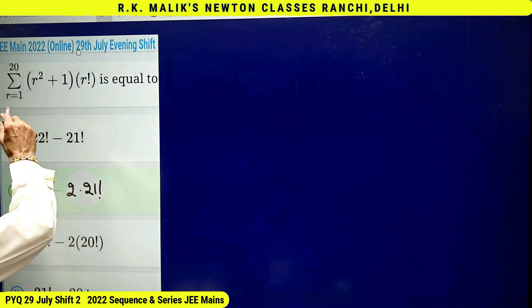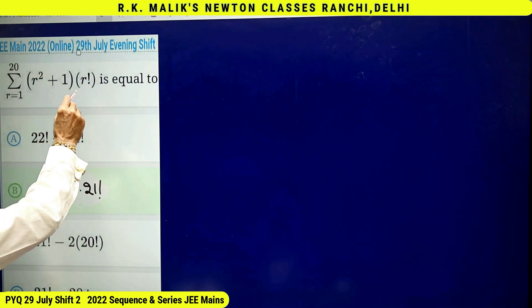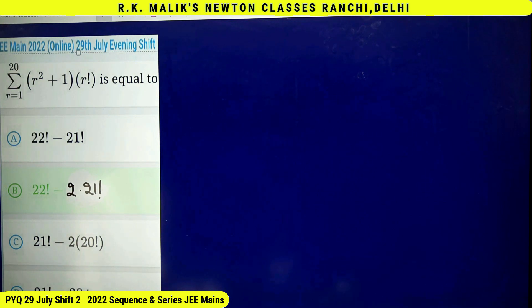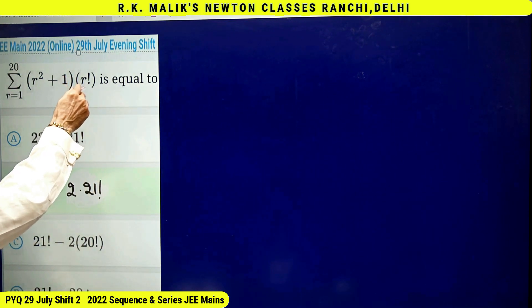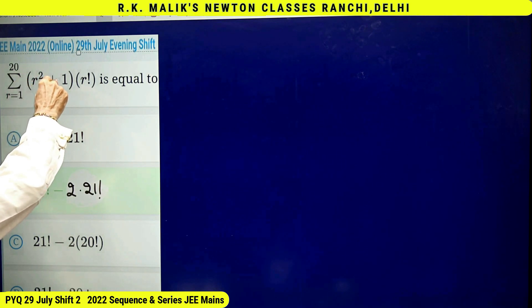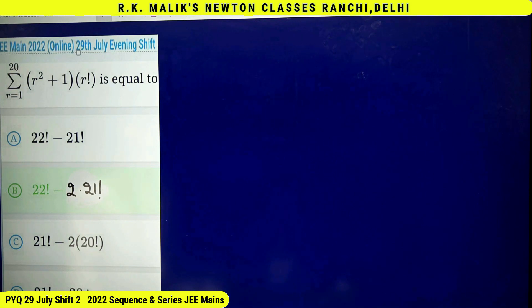In this question, it is given that sigma r equals 1 to 20 of (r squared plus 1) times r factorial, and you have to find the correct choice. In this type of question, when some factorial multiplied by some linear, second degree, or third degree polynomial in r is given, in such cases we use the telescopic sum method. If you don't know what telescopic sum method is in detail, you will have to see my video lecture on sequences and series.